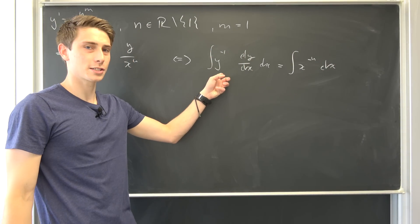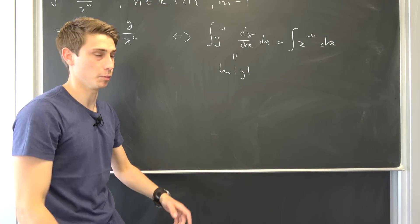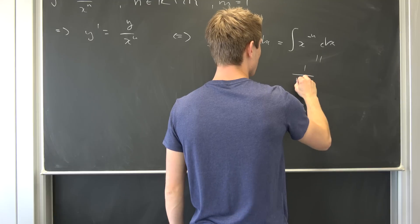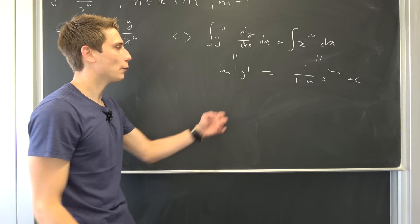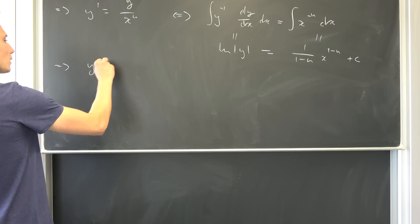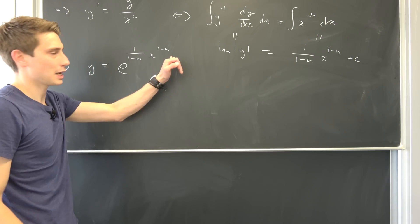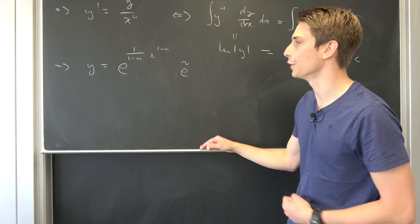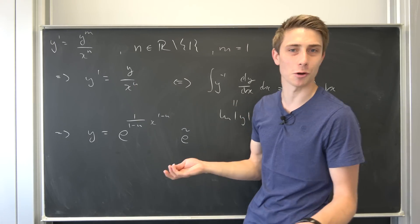Integrating both sides with respect to x: the left side evaluates to the natural log of y plus some arbitrary constant. The right side is 1 over (1 minus n) times x to the (1 minus n)th power plus some constant c. Now we exponentiate both sides, so y equals e to the power of [1 over (1 minus n) times x to the (1 minus n)th power], multiplied by a constant e-tilde. This is the general solution when the power of y is 1.